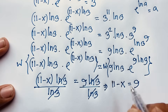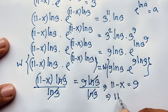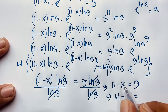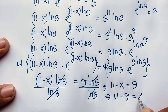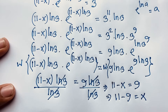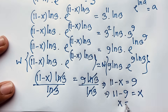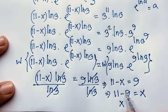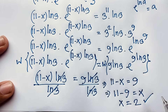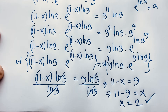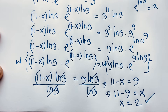Now you can see: 11 minus 9 equals 2. If I move the negative x to the other side it becomes positive x. So x is equal to 11 minus 9, which is 2. This is our real solution — this is the value of x in this exponential maths problem.